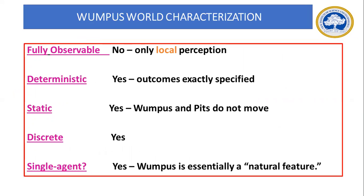Analyzing the characteristics of the Wumpus World environment: it is partially observable — the agent only perceives the current room locally, not the full grid. It is deterministic — the outcome of each step is exactly known. It is static — the Wumpus and pit do not move. It is discrete, and it is a single-agent problem.